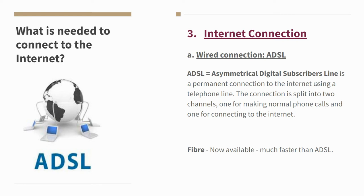ADSL is a permanent connection to the Internet using a telephone line. The connection is split into two channels: one for making a normal phone call and one for connecting to the Internet. Before ADSL, your telephone and Internet shared the same connection, so you couldn't receive calls while connected online. One of the greatest benefits of ADSL was being able to use the telephone line while simultaneously being connected to the Internet.